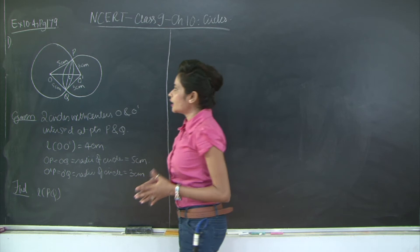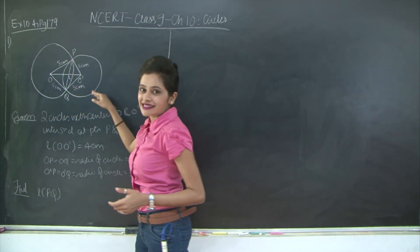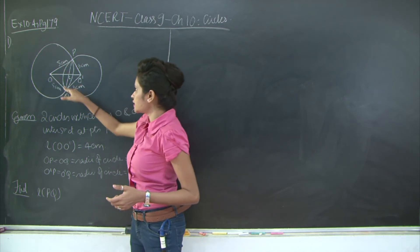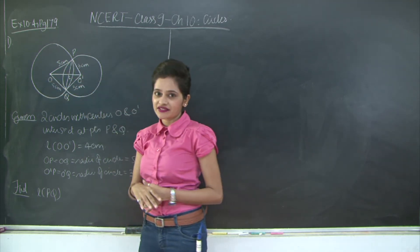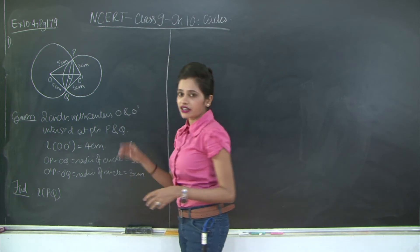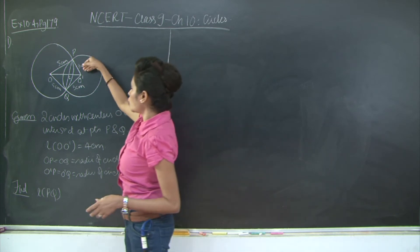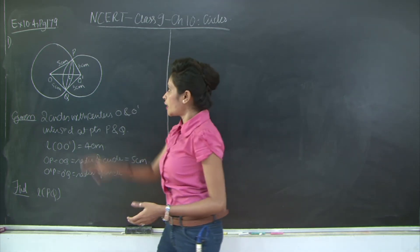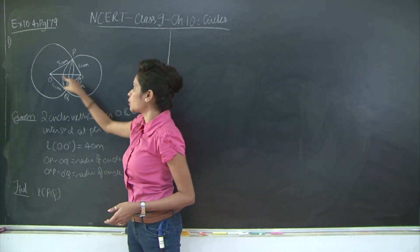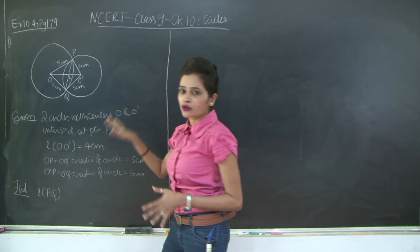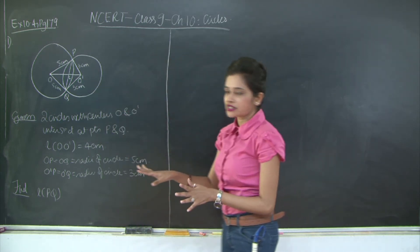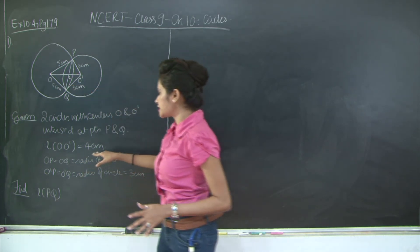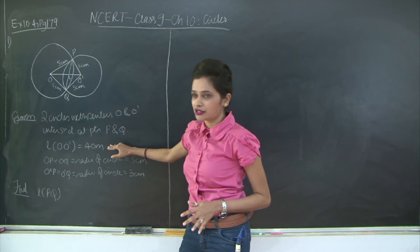The first question: we have two circles with centers O and O'. The radius of the largest circle is 5 centimeters, so OP is equal to OQ which is 5 centimeters. The radius of the smallest circle: O'P is equal to O'Q is equal to 3 centimeters each. We have connected these two centers to draw the line segment OO', and this length is 4 centimeters.